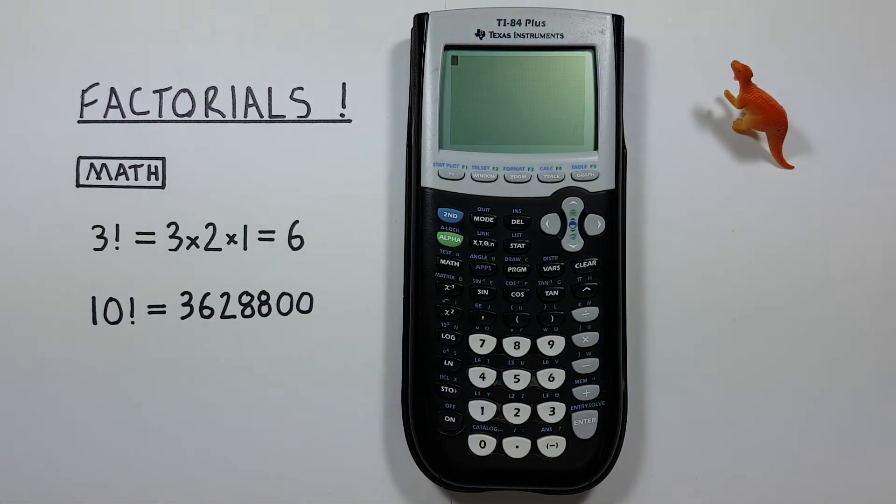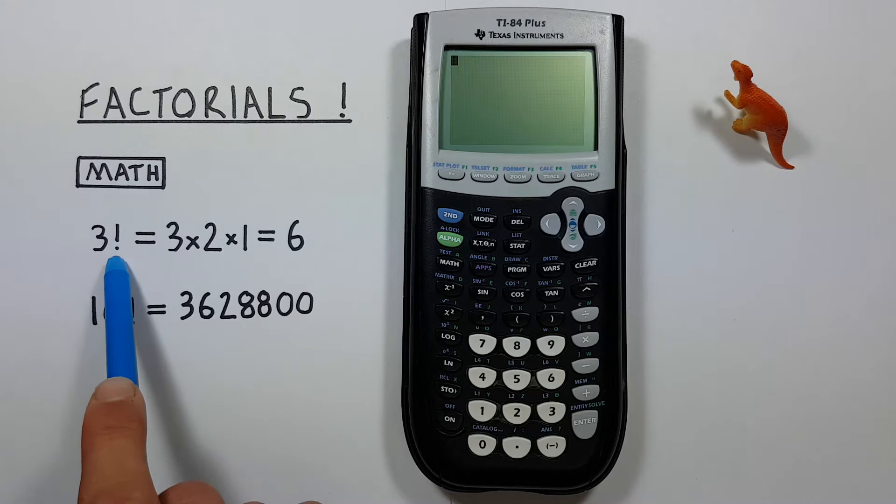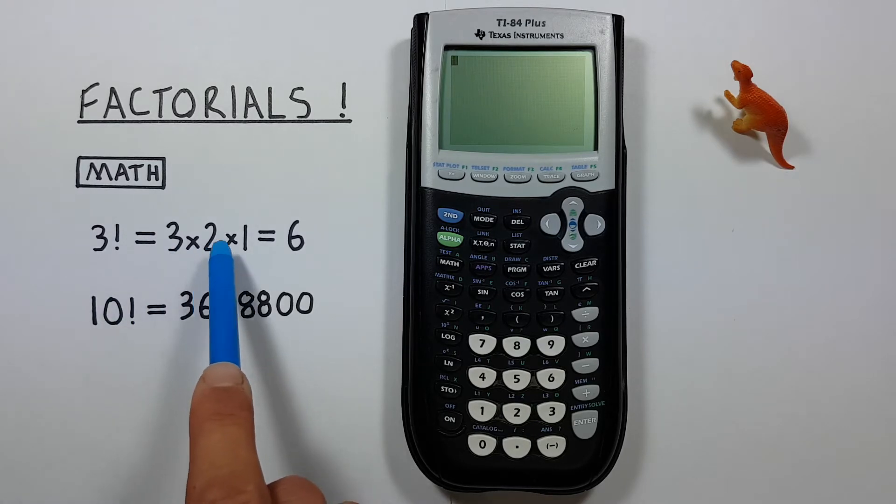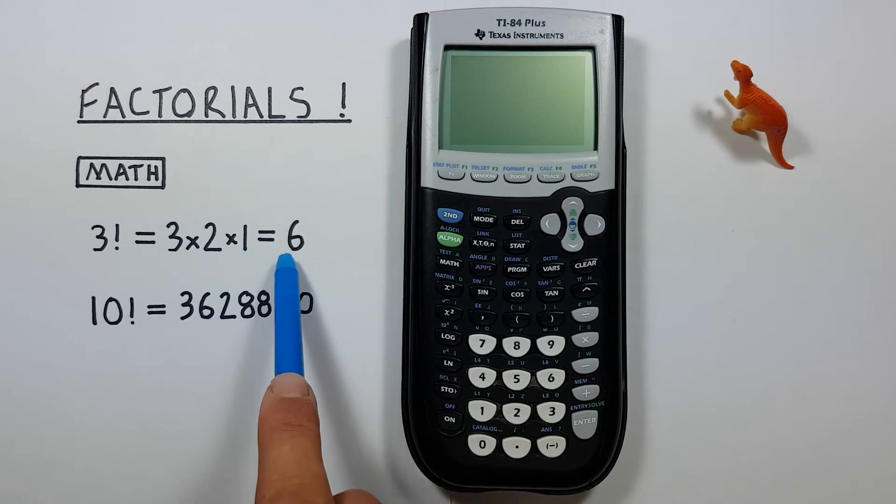If we wanted to do a simple factorial like say 3 factorial, well we know a factorial is the product of a number and all integers below it multiplied together. So 3 factorial would be 3 times 2 times 1 and we could just multiply those together to get a result which would be 6. But we can also use the factorial function on this calculator.